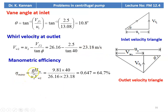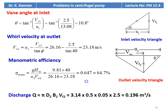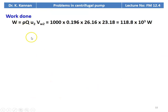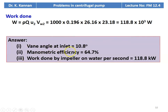Manometric efficiency equals g Hm divided by U2 VW2: 9.81 into 40 divided by 26.16 into 23.18 equal to 0.647, which is 64.7 percent. Discharge Q equal to pi D2 B2 into VF2: 3.14 into 0.5 into 0.05 into 2.5 equal to 0.196 m³/s. Work done W equal to mass flow rate into U2 VW2: 1000 into 0.196 into 26.16 into 23.18 equal to 118.8 kilowatts. Answers: vane angle at the inlet 10.8 degree, manometric efficiency 64.7 percent, work done 118.8 kilowatts.